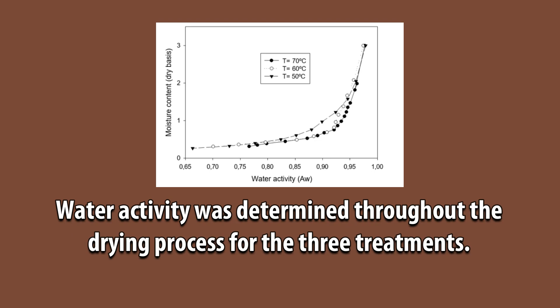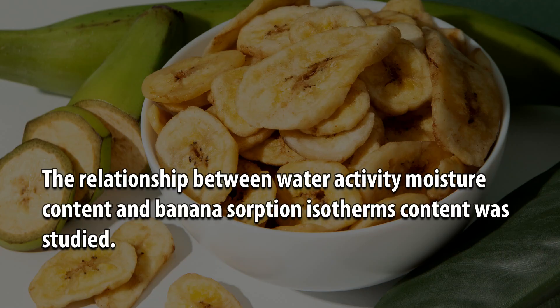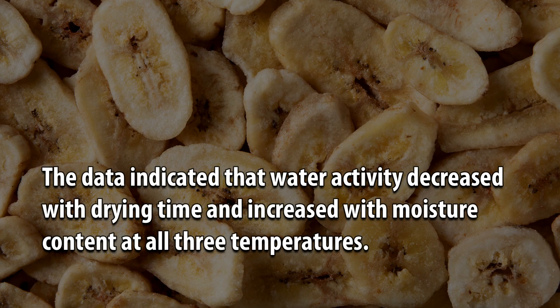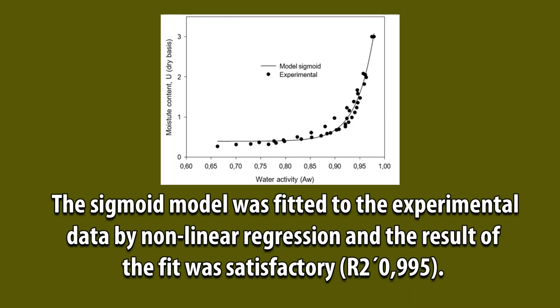Water activity was determined throughout the drying process for the three treatments. The relationship between water activity, moisture content and banana sorption isotherms was studied. The data indicated that water activity decreased with drying time and increased with moisture content at all three temperatures. The sigmoid model was fitted to the experimental data by non-linear regression with a satisfactory result of R² = 0.9995.